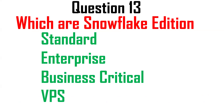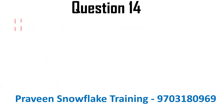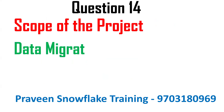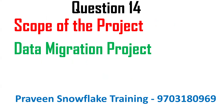Next question: which Snowflake editions are available? The editions are Standard, Enterprise, Business Critical, and VPS (Virtual Private Snowflake). Most commonly used are Enterprise and Business Critical. For more sensitive data, such as banking data, we go with VPS. The scope of most Snowflake projects is data migration — moving data from legacy databases like Oracle, MySQL, or DB2 into Snowflake for better performance and cost efficiency.